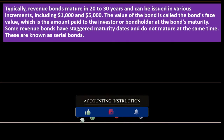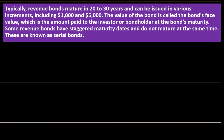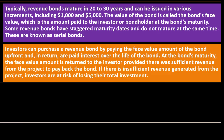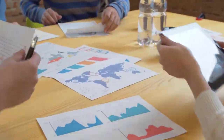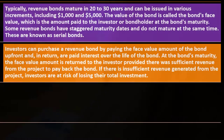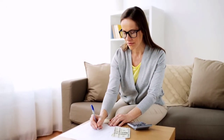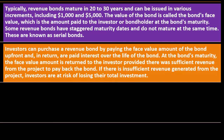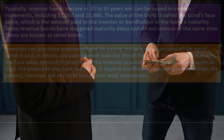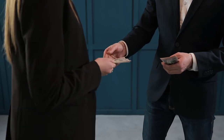Some revenue bonds have staggered maturity dates and do not mature at the same time — these are known as serial bonds. Staggering maturity dates on purpose provides more diversification in terms of when obligations come due. Investors purchase a revenue bond by paying the face value amount up front and in return are paid interest over the life of the bond. At the bond's maturity, the face value amount is returned to the investor, provided there was sufficient revenue from the project to pay back the bond.